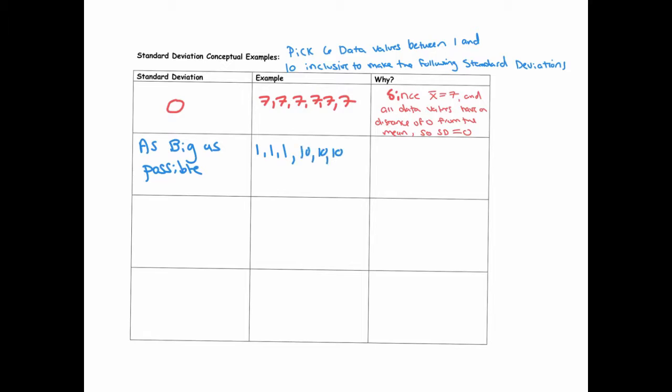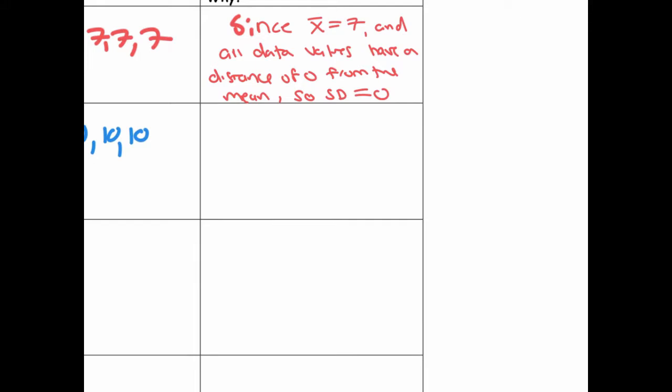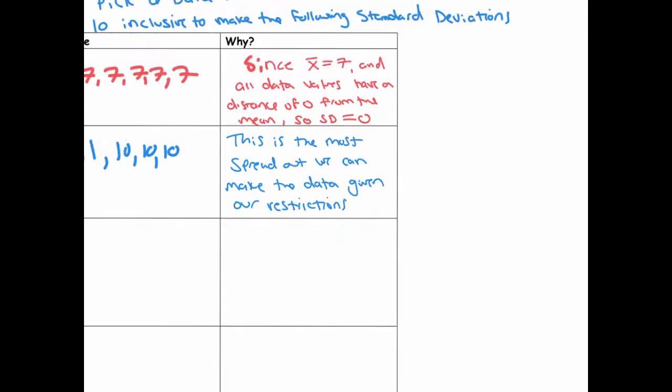Okay, because your mean will be right in the middle. And you really can't get any farther from the center than 1 and 10 because we can only pick numbers between 1 and 10 inclusive. Okay, so that's how you'd make your standard deviation as big as possible. So I'm going to write for the y. Let's say, this is the most spread out we can make the data given the restrictions. Given the fact that we can only use numbers from 1 to 10 inclusive.